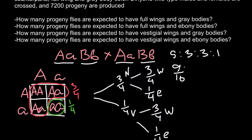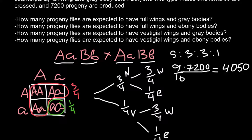We have to multiply by 7200, which means we multiply 9 by 7200 and divide by 16. Our answer is 4050. This is the answer for the first question: 4050 flies with full wings and gray bodies.